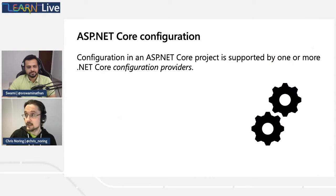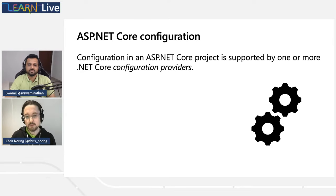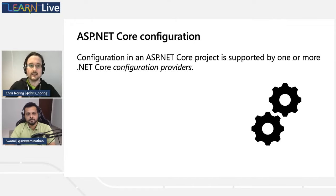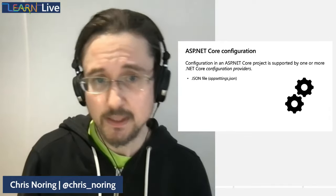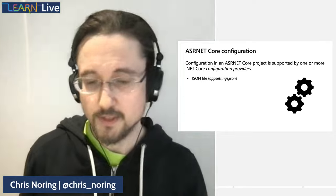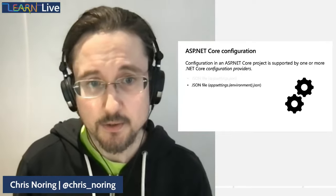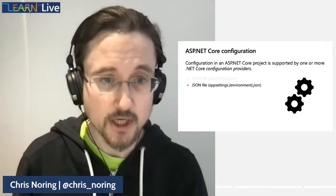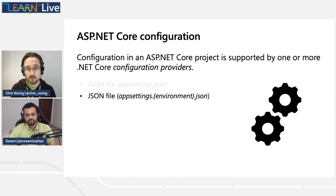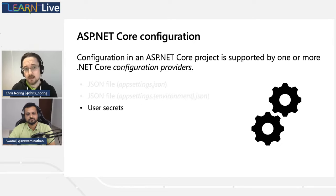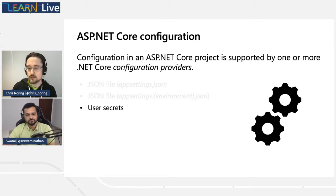ASP.NET Core configuration has a concept of providers — different functions able to read data from somewhere. By adding a provider, you add a capability. One provider reads from appsettings.json, a JSON file you get when you scaffold a new ASP.NET project. You can also have environment-specific versions: appsettings.dev.json, .staging, or .prod. Thirdly, you can use user secrets — a secrets management system. If you're not using that already, please start — it's a great separator between code and configuration.